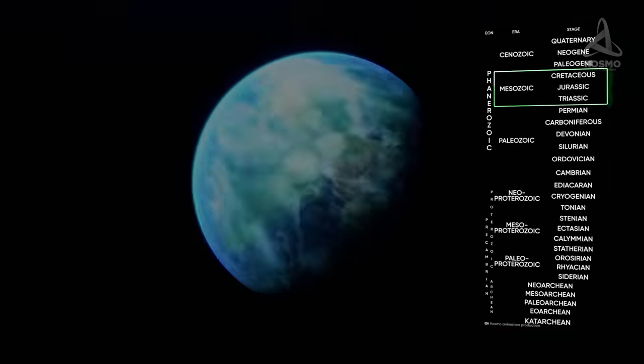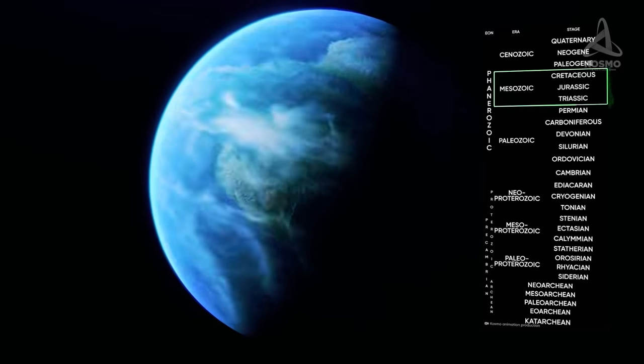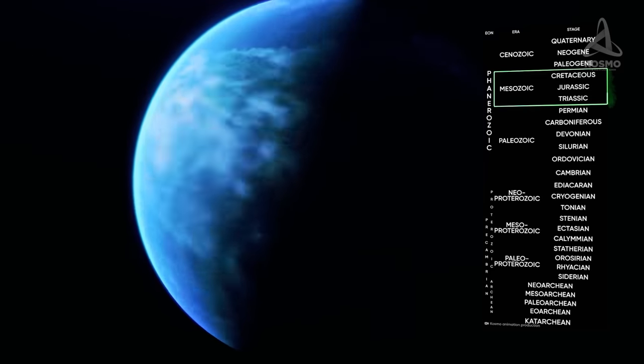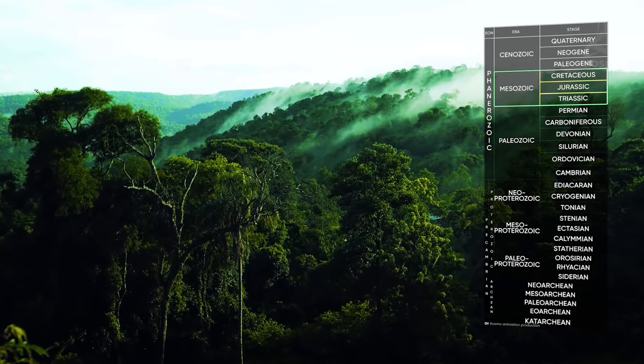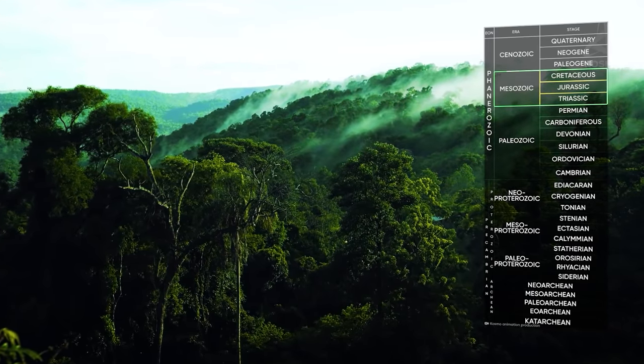The Mesozoic era lasted from 250 to 66 million years ago. It is subdivided into three periods, the Triassic, the Jurassic and the Cretaceous. This is when dinosaurs thrived. Admittedly, the most well-known prehistoric creatures that became subject of feature and science fiction movies.